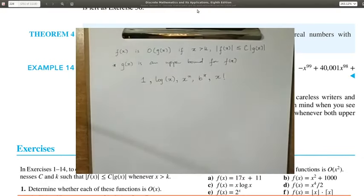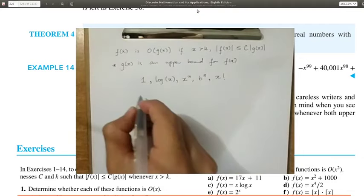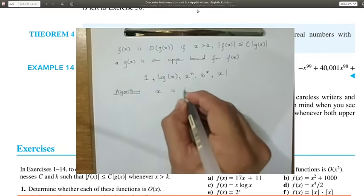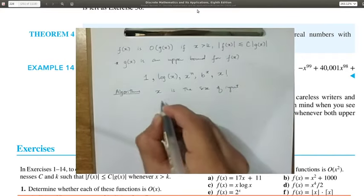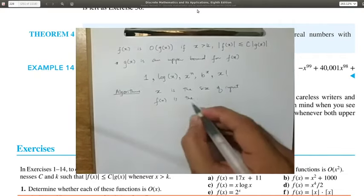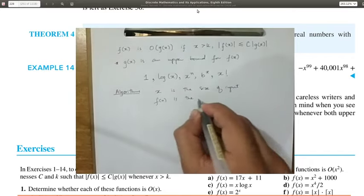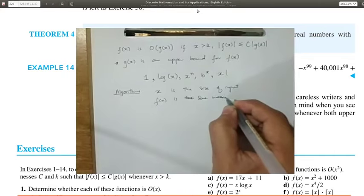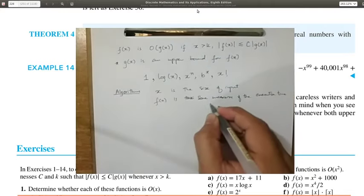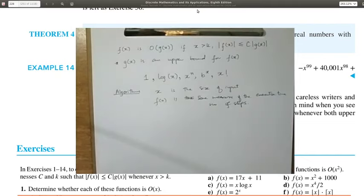This relates to algorithms because when you want to express the running time or computational complexity of an algorithm in terms of input, x is the size of the input and f(x) is some measure of complexity — number of steps, execution time, or whatever you choose to quantify as a nice measure of the complexity of your algorithm.